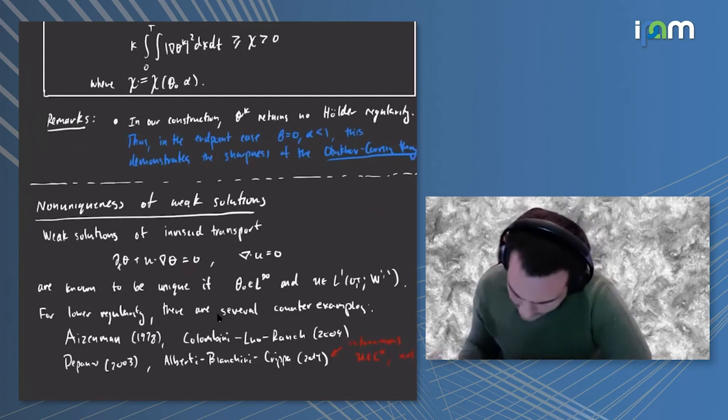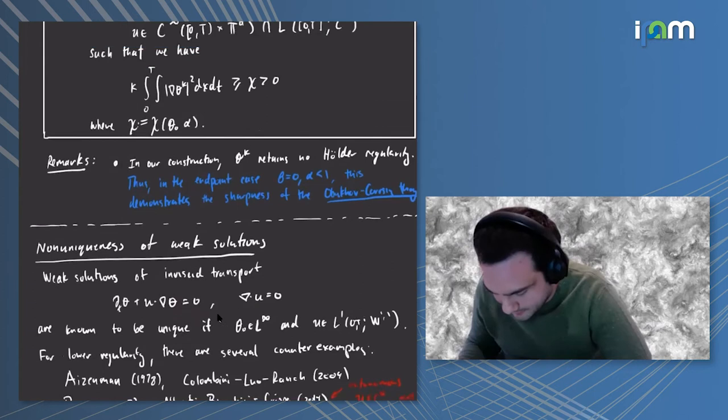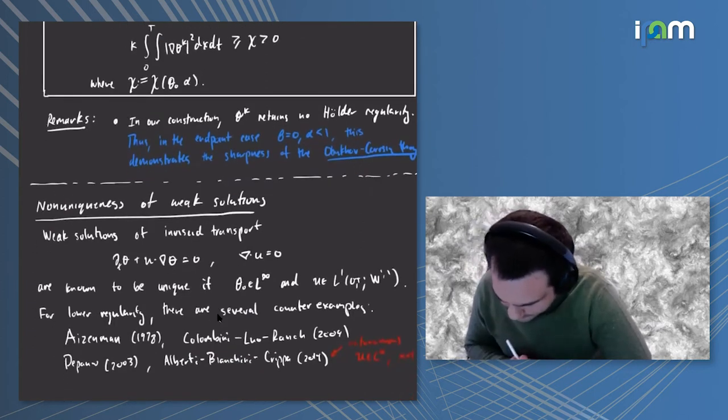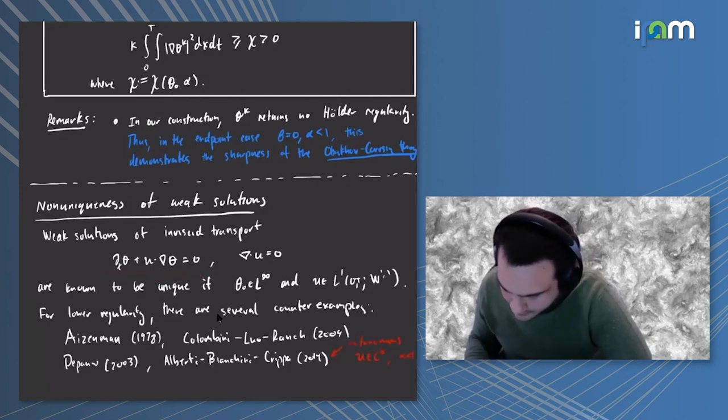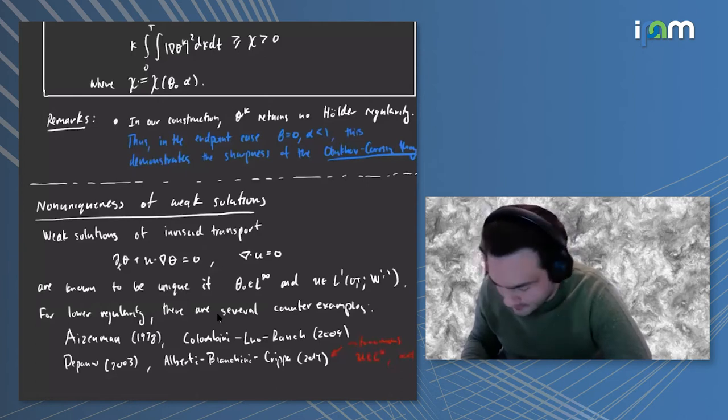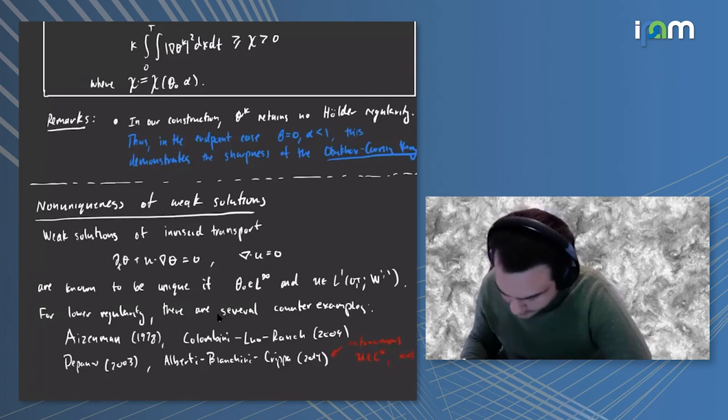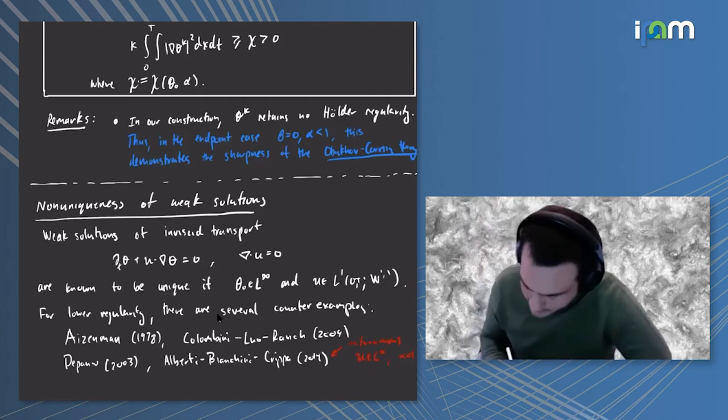There's a very quick and easy implication concerning non-uniqueness of weak solutions of inviscid transport equation. It's well known that if you have bounded initial data and L1 in time W^{1,1} drift, then you have DiPerna-Lions theory for uniqueness of weak solutions. When you go to lower regularity, there are a number of counter examples to uniqueness.